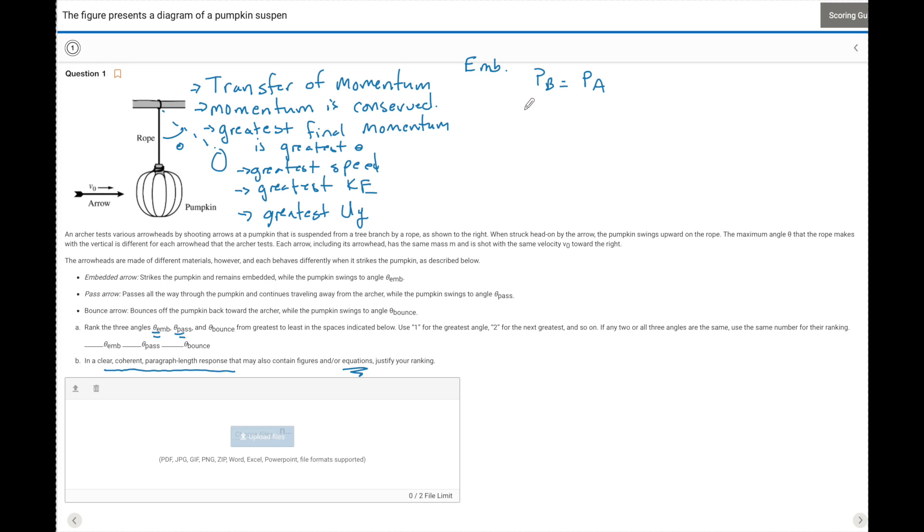So we have the M of the arrow and the V of the arrow before. That is going to equal the mass of the arrow plus the mass of the pumpkin times some final speed of that system. So the final speed here is going to be equal to M_A V_A before, or the momentum before, divided by M_A plus M_P. So this is going to be one thing that we're going to have to relate.